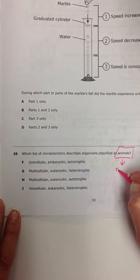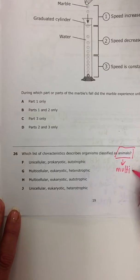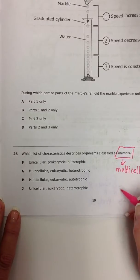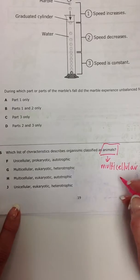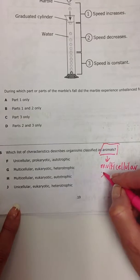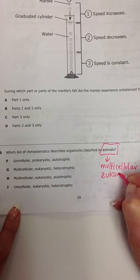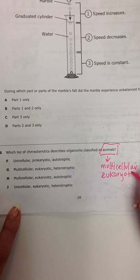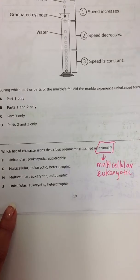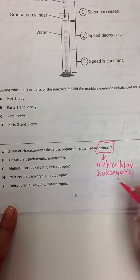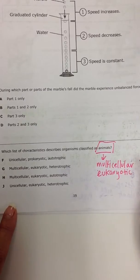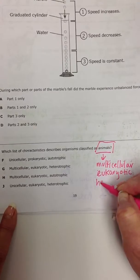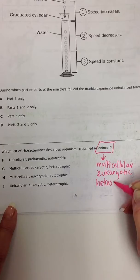We are multicellular. We have a true nucleus in our cells, so that means we are eukaryotic. And we have to eat other organisms or gain energy from eating other organisms. That means we are heterotrophic.